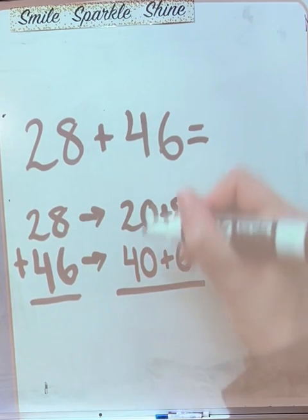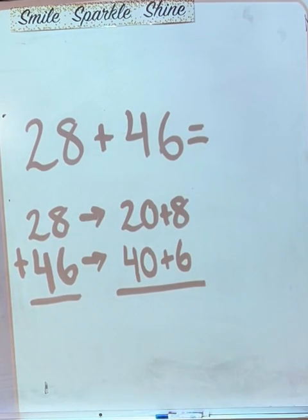Now we're going to add down. What is 20 plus 40? 60. What is 8 plus 6? 14.